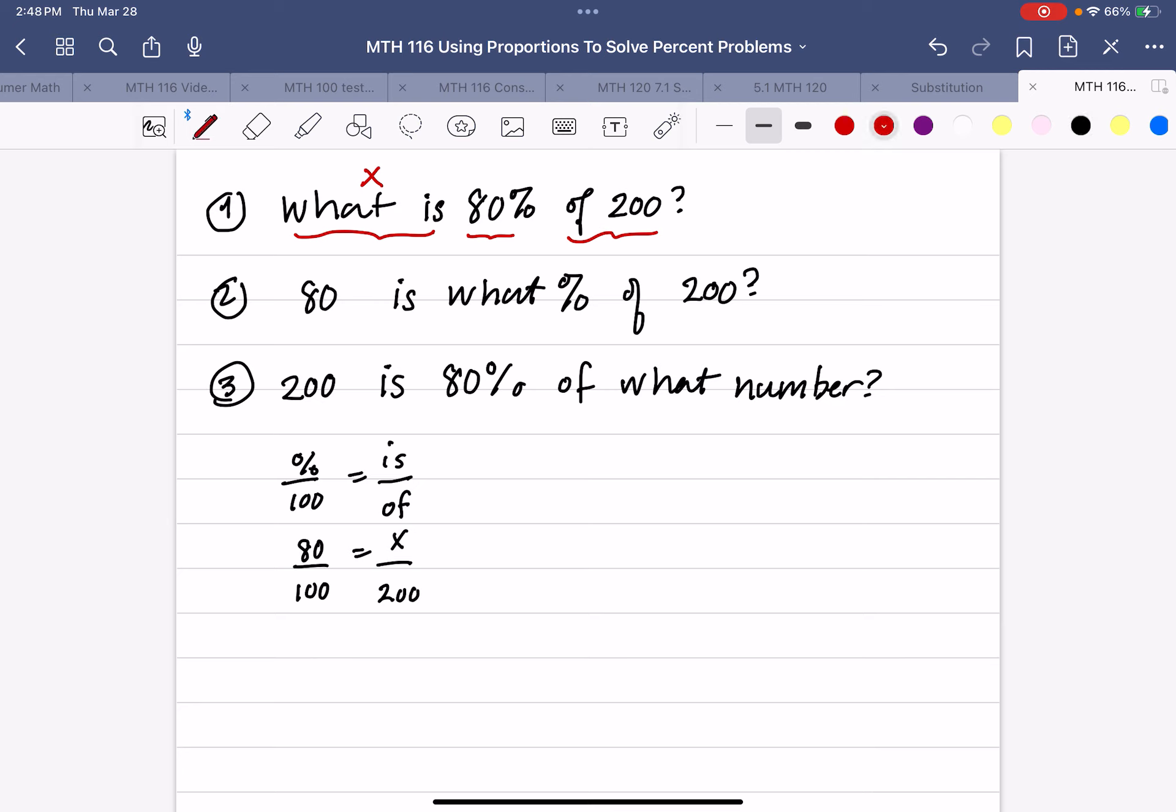And for all proportions, we cross multiply. It doesn't matter which ones you do first, as long as you go top to bottom, top to bottom. So, I'm going to get 16,000 equals 100x, divide both sides by 100, and we get 160, just like we did when we used arithmetic.